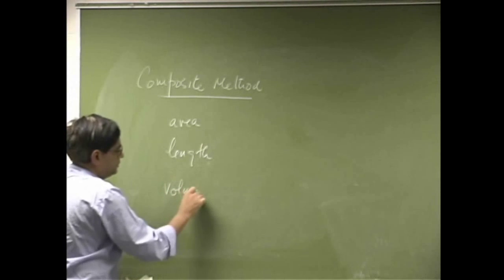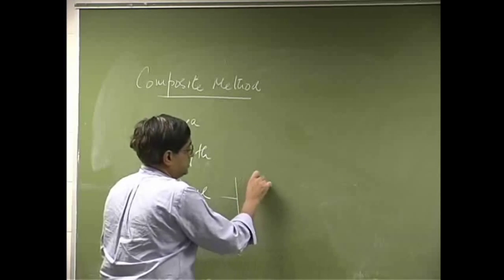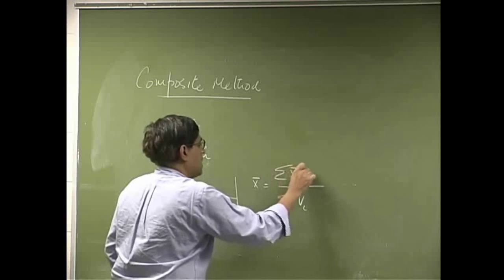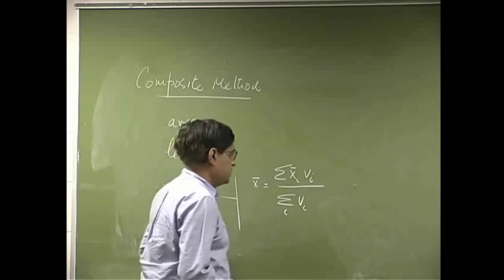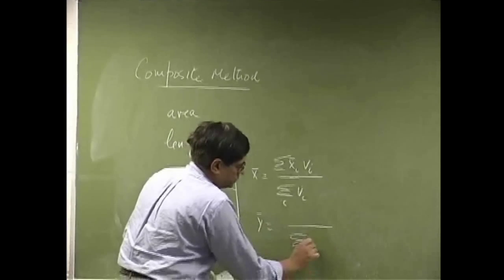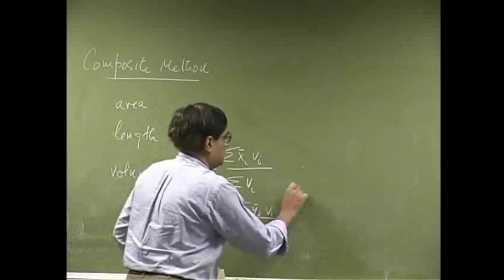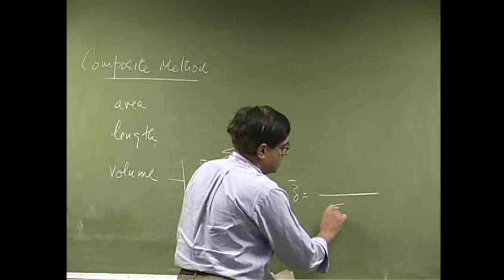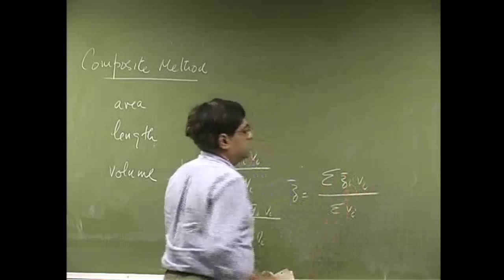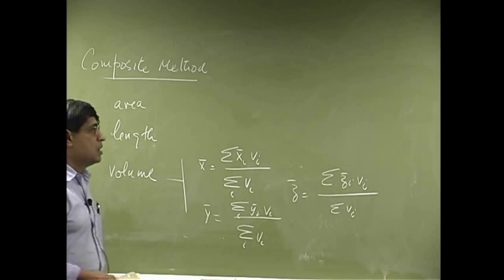We are going to look at the volume. For this case, the x-coordinate of the centroid, X-bar, is the sum of the volumes times x̄_i divided by V_i. Then you have the y-coordinate as the sum of the volumes ȳ_i times V_i, and the z-coordinate of the centroid as the sum of C̄_i times V_i. These formulas give you the coordinates of the centroid of a given volume.